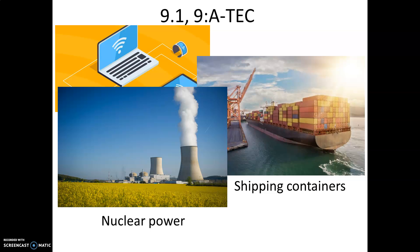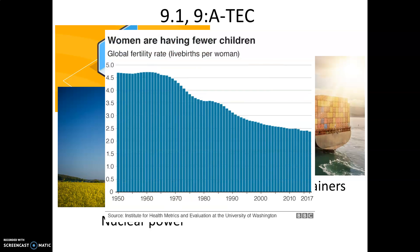Energy technologies, including nuclear power, have raised productivity and increased the production of material goods. Nuclear power is a form of energy created using nuclear reactions. Some feel it's safe and sustainable, while others maintain that it poses serious dangers to the environment and those living near them. Effective birth control has given women greater control over fertility, transformed reproductive practices, and contributed to declining fertility rates, as seen in data up to 2017.